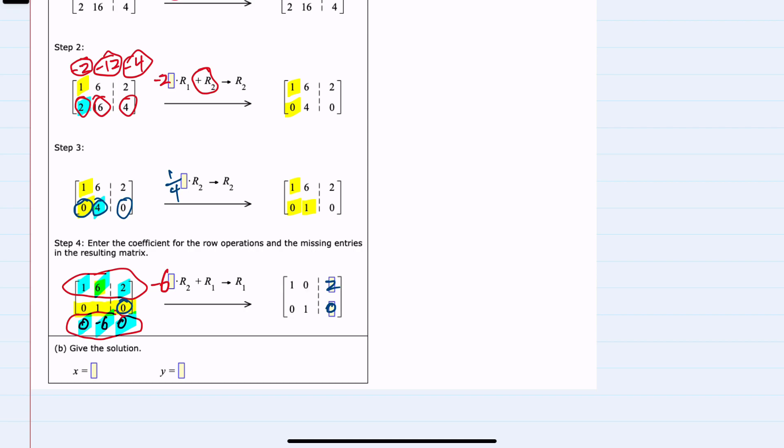the first column represented x, and so one x equals two, x is two. The second column was y, and one y equals zero, so y equals zero. So we've solved the system of equations.